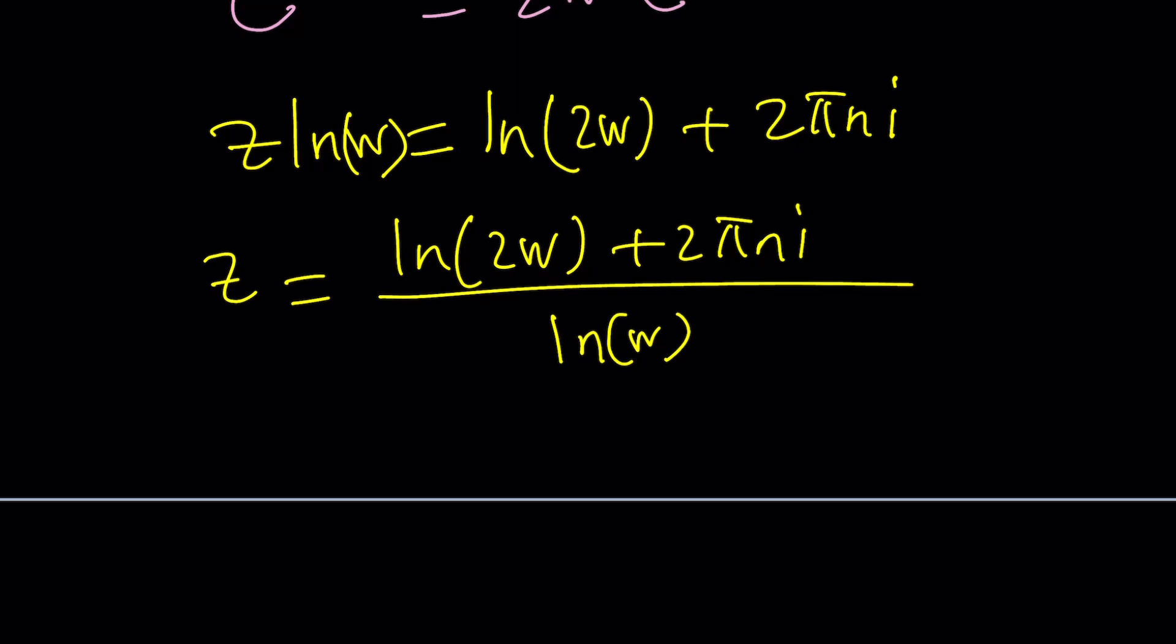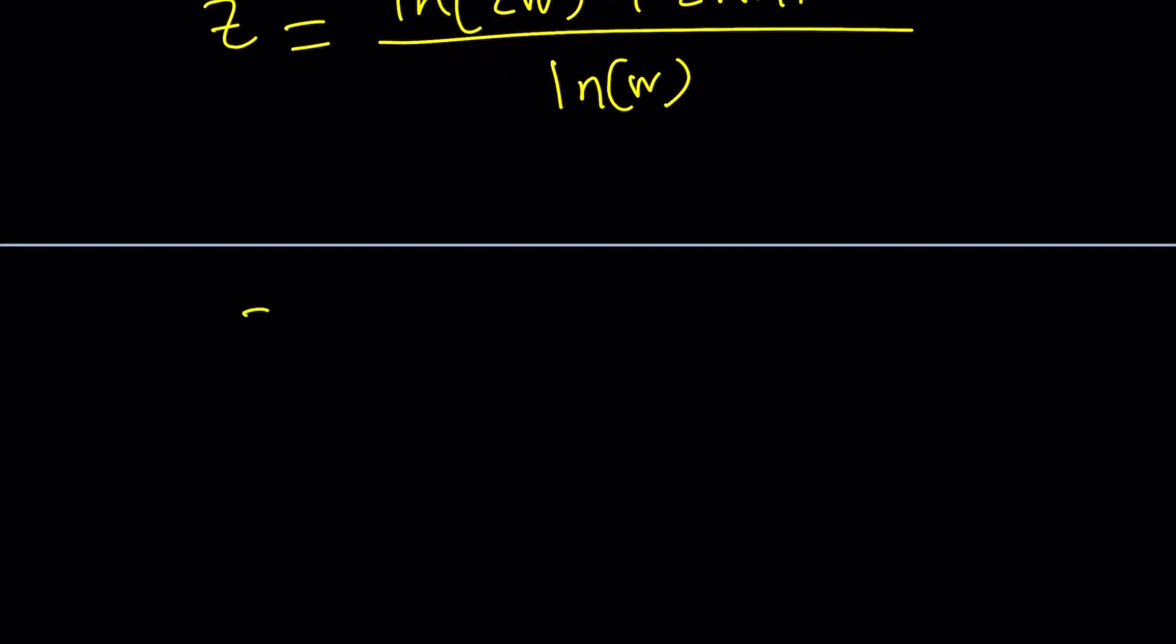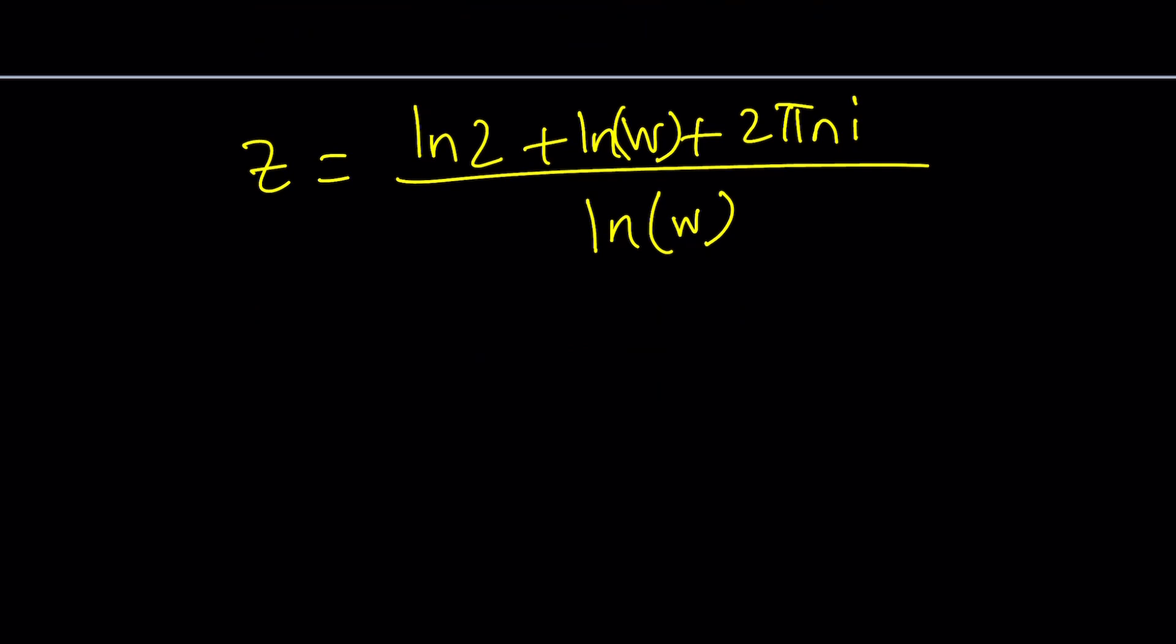Now here's the thing. You can break it down even more. Right. And to be able to break it down even more you can kind of distribute this and 2 times w is a product. So we can basically write this as ln 2 plus ln w plus 2 pi n i divided by and again I'm going to put the w in parentheses because it's a letter so it doesn't get mixed and I can kind of write my solution like this.